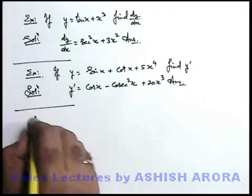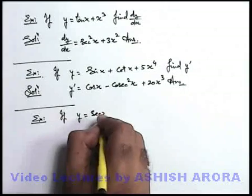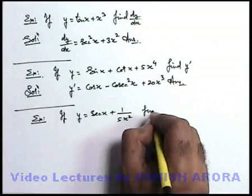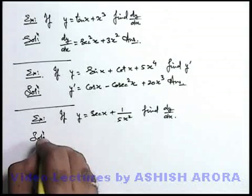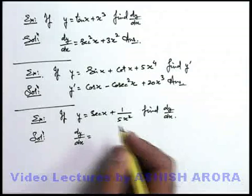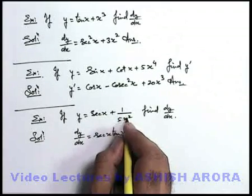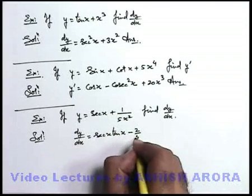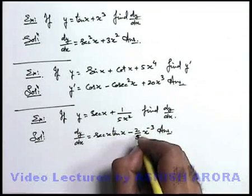One more example: if we are given with y = sec x + 1/(5x²) and we are required to find dy/dx. In this situation if we directly apply the result, dy/dx will be: for sec x the direct differentiation formula is sec x tan x. And for 1/(5x²), writing it as (1/5)x^(−2), it becomes −2/(5) · x^(−3). This is the answer — you can also write it as −2/(5x³).